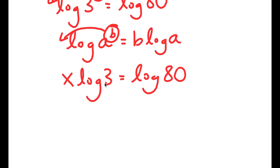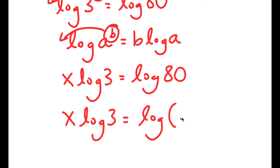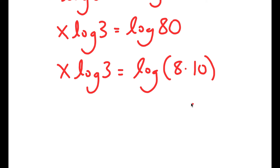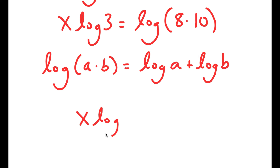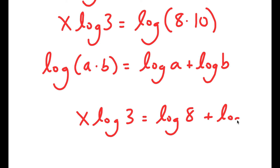Now what I'm going to do is, before isolating x, I'm going to rewrite log 80. I can first rewrite log 80 as log of 8 times 10. Another property of logarithms is that if I have something in the form log of a times b, this is equal to log of a plus log of b. So log of 8 times 10 equals log of 8 plus log of 10.